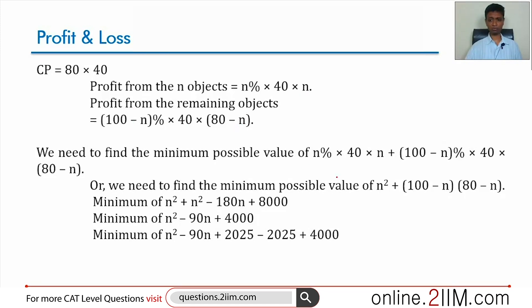We need to find the minimum of n percent into 40 into n plus 100 minus n percent into 40 into 80 minus n. The percentage factor n by 100 won't change the minimum, so we're finding the minimum of...